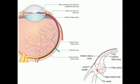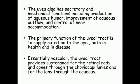The uveal tract receives its blood supply from the anterior and posterior ciliary branches of the ophthalmic artery. This is an important point: the anterior and posterior ciliary branches of the ophthalmic artery supply the uveal tract, which in turn plays an important role in providing vasculature and nourishment to the entire eye. The uvea also has secretory and mechanical functions, including production of aqueous humor, improvement of aqueous outflow, and control of near accommodation.